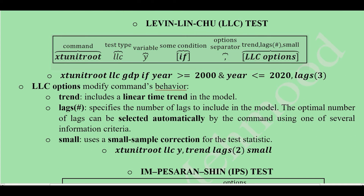The first is the LLC test. The command syntax starts with the panel data unit root command, then we write LLC for the type of test. After that, we specify the variable for which we are finding the unit root. We are also permitted to include a condition — for example, to calculate the test for a selected range of years. Then we add a separator followed by the LLC options, which include trend, lags, and small arguments.